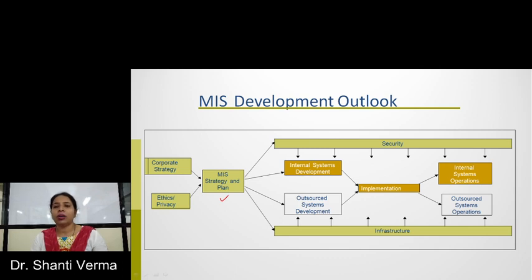In security and infrastructure, there are various components like internal system development and outsource system development. Internal system development means that which is used within the company, and outsource system development means that which is purchased from another organization and used in this company. Implementation of both are done, and with that, internal systems operations and outsource system operations are performed.